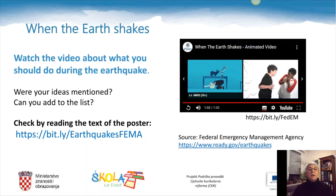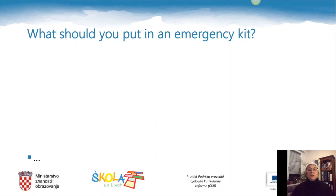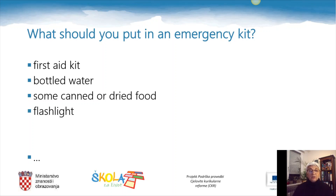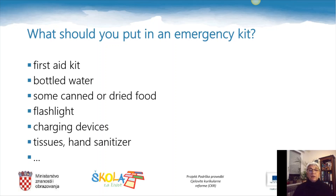That's why it's very important to be ready and to practice. What should you put in an emergency kit? I'm sure you have some ideas. First aid kit, some water — bottled water — canned or dried food in case you have to stay out for a longer time, a flashlight, charging devices for your mobile phone or other devices, some tissues, and hand sanitizer. There will be some more things you need.